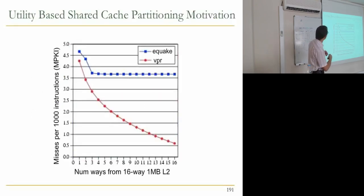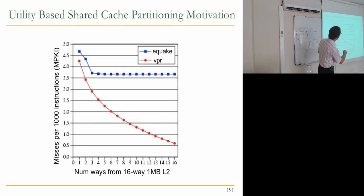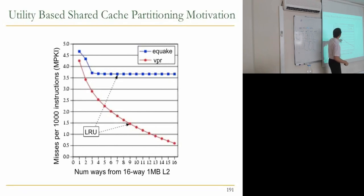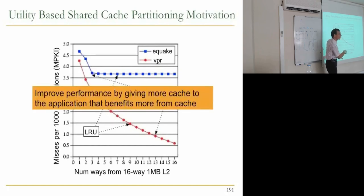Looking at the motivation for utility-based shared cache partitioning: with a shared cache partitioned in granularity of 1/16th, consider two applications — an earthquake simulator and a place-and-route application (VPR). LRU can give an arbitrary partition, but utility-based cache partitioning targets the knee of the curve — giving only as much cache to an application as it benefits from. For example, providing two or three ways to one application and the remaining 13 ways to the other yields much better performance, because the combined miss rate is the addition of the two individual miss rates.